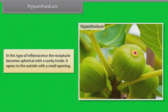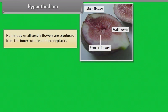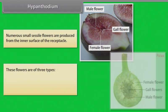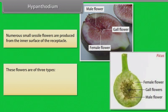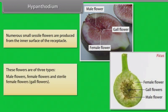In hypanthodium, the receptacle becomes spherical with a cavity inside and opens to the outside with a small opening. Numerous small sessile flowers are produced from the inner surface of the receptacle. These flowers are of three types: male flowers, female flowers, and sterile female (gall) flowers. Example: Ficus.